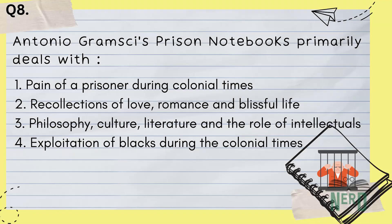Question 8. What does Antonio Gramsci's Prison Notebooks primarily deal with? 1) Pain of a prisoner during colonial times, 2) Recollections of love, romance, and blissful life, 3) Philosophy, culture, literature, and the role of intellectuals, 4) Exploitation of Blacks during the colonial times. Answer: 3, philosophy, culture, literature, and the role of intellectuals. Antonio Gramsci, a major Italian Marxist thinker, managed to write his famous Prison Notebooks — or Quaderni del Carcere — while he was locked up by the fascist government from 1929 to 1935, after being nabbed in 1926.